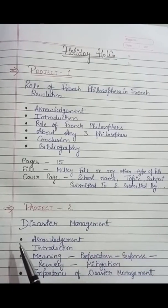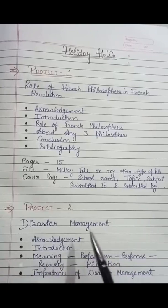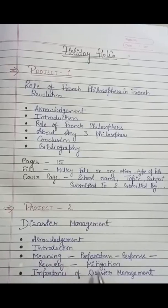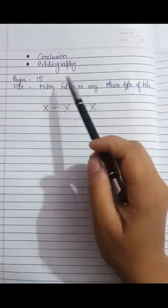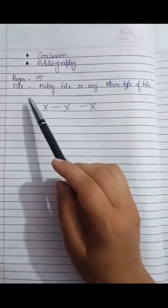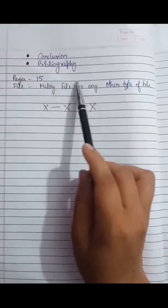In the second project, that is disaster management, you have to again write the acknowledgement and introduction. In disaster management, you can write the meaning of disaster management, then preparedness — means how the disaster management team is prepared about the disaster — then response, recovery, and mitigation. Mitigation means what steps they take to recover from disaster. Then the importance of disaster management. And at last, write the conclusion and bibliography. This project should be maximum 15 pages, and you have to make only one file — put both projects, history and geography, in that one file.